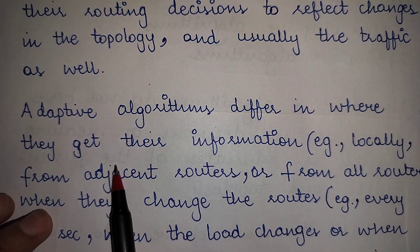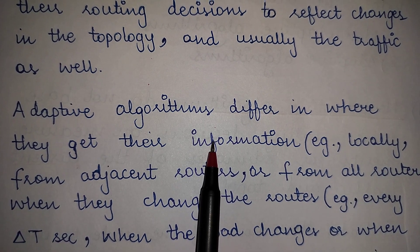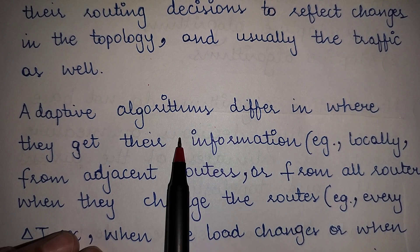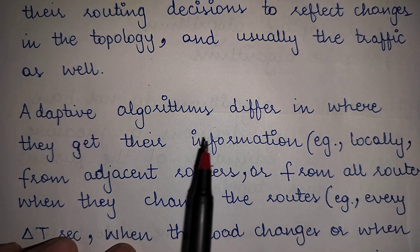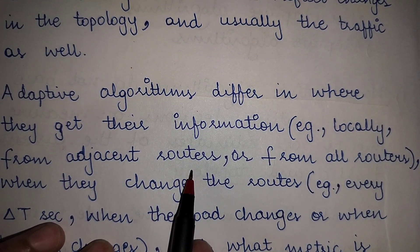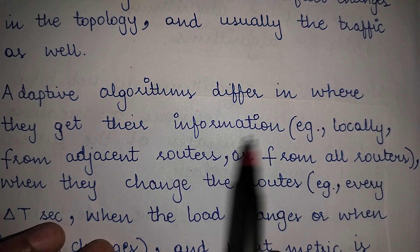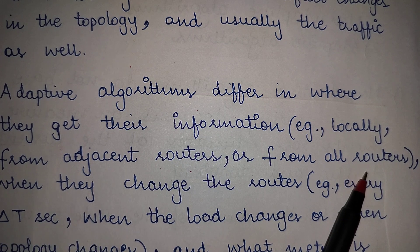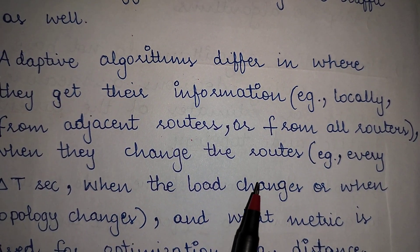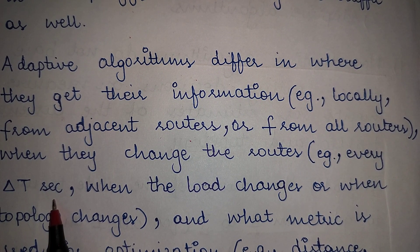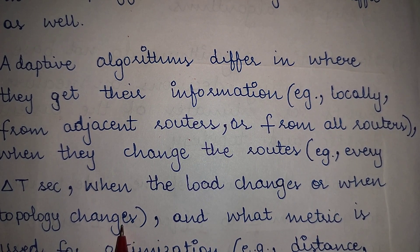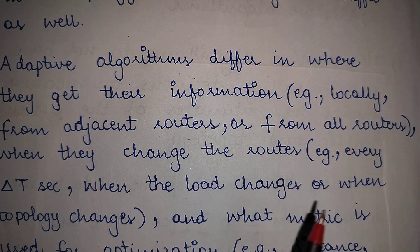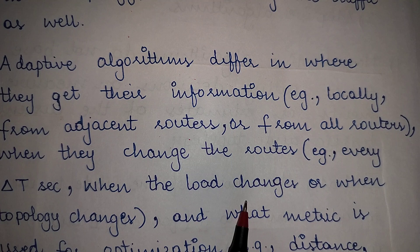Adaptive algorithms differ in where they get their information. In case of non-adaptive algorithms, the route was computed in advance, but adaptive algorithms get information regarding topology or traffic conditions from locally adjacent routers or from all the routers. They change routes every delta-t seconds — whenever the network load changes or when the topology changes.